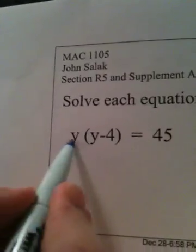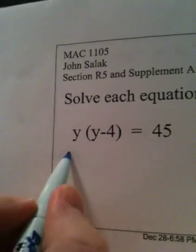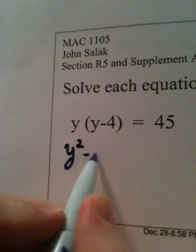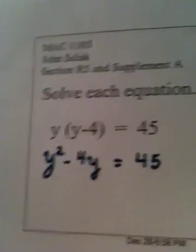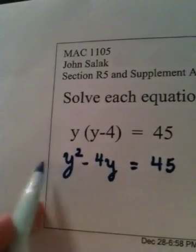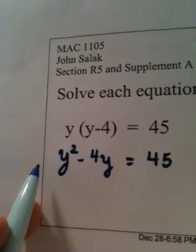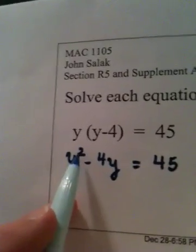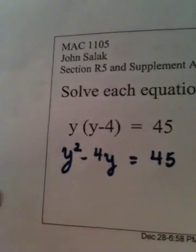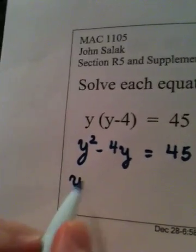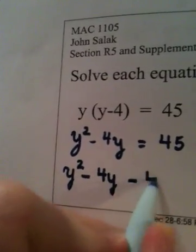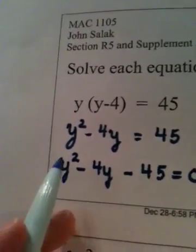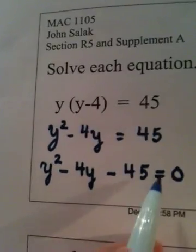So if I'm solving this equation, the first thing I'm going to do is distribute, which will give me y squared minus 4y is equal to 45. Now, I recognize this is a quadratic equation. And when we solve a quadratic equation, we put it in standard form.